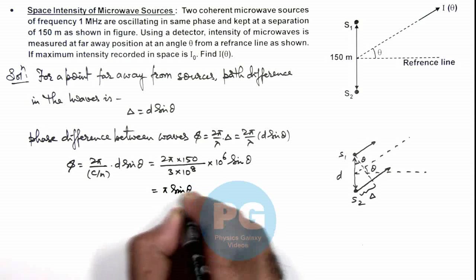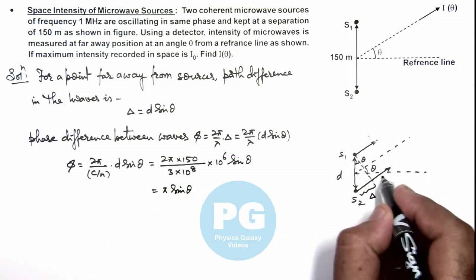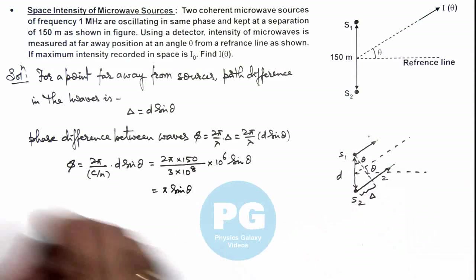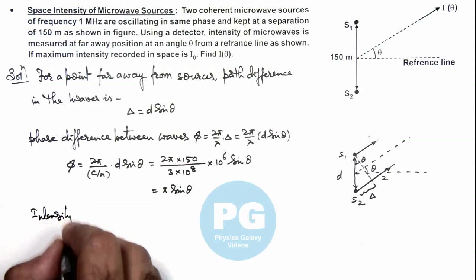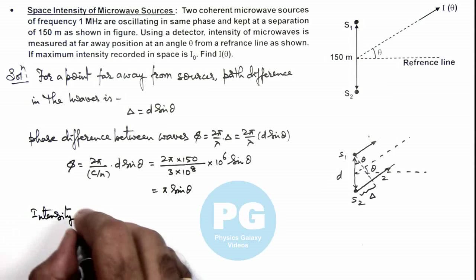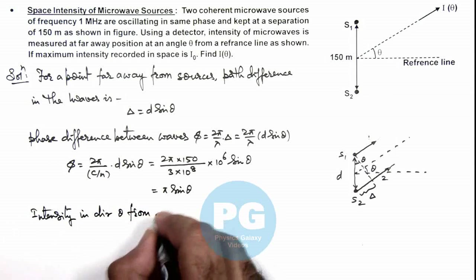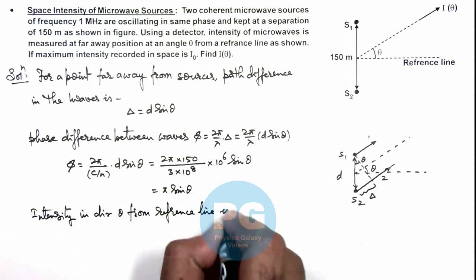So this is the value of phase difference between these two waves from source 1 and source 2 at the far away point. So in this situation we can calculate intensity in direction theta from reference line.